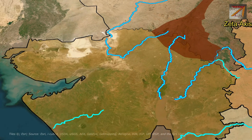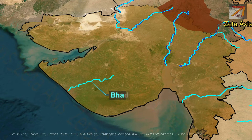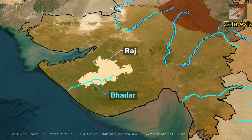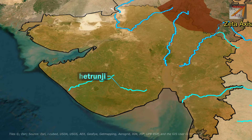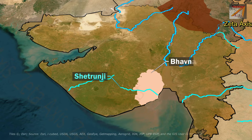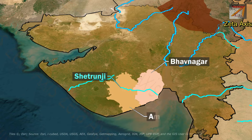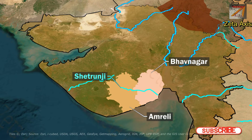The next important river of Gujarat is Bhadar River, which flows in the Saurashtra Peninsula of Gujarat. It originates in Rajkot district and flows into the Arabian Sea near Porbandar. The next river is Shatrunjay River, which also flows in the Saurashtra Peninsula of Gujarat. It is an eastward-flowing river in Bhavnagar district, rising northeast of Gir Hills in Amreli district, and empties into the Gulf of Khambhat.